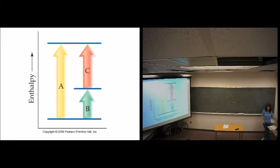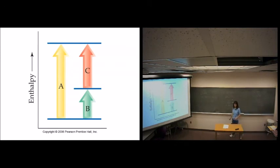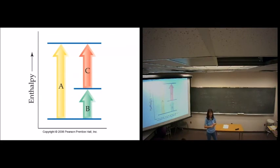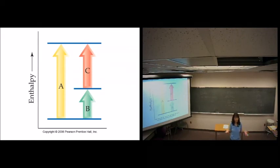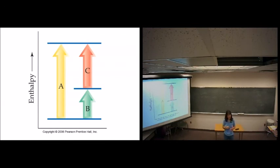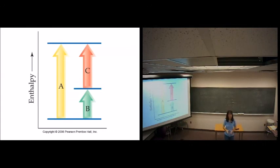Coffee cup calorimetry occurs under constant pressure; bomb calorimetry is under constant volume. That was the first method. Now let's talk about Hess's Law — the second method. We're looking for the enthalpy of a reaction, and Hess's Law uses the fact that enthalpy is a state function.